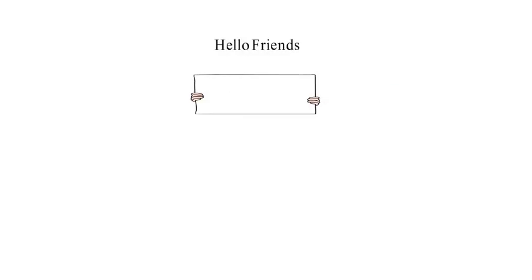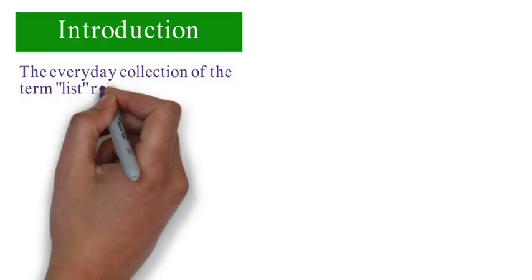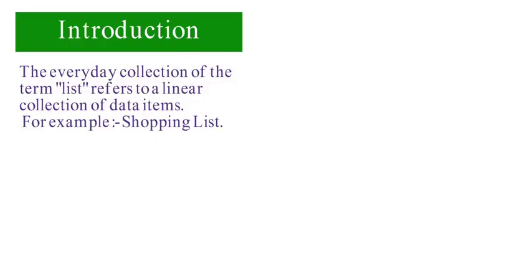Hello everyone, today we will discuss linked lists. The everyday use of the term 'list' refers to a linear collection of data items. For example, a shopping list contains a first element, a second element, and a last element.